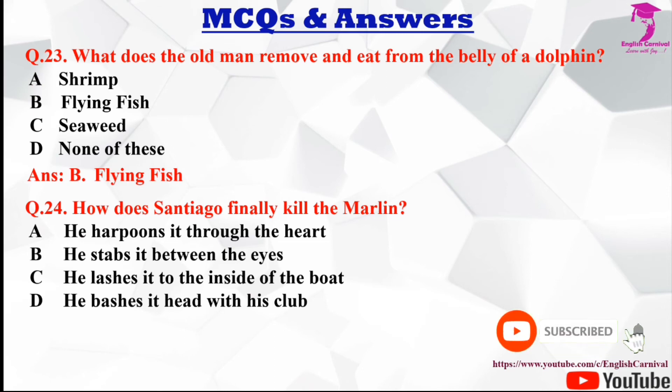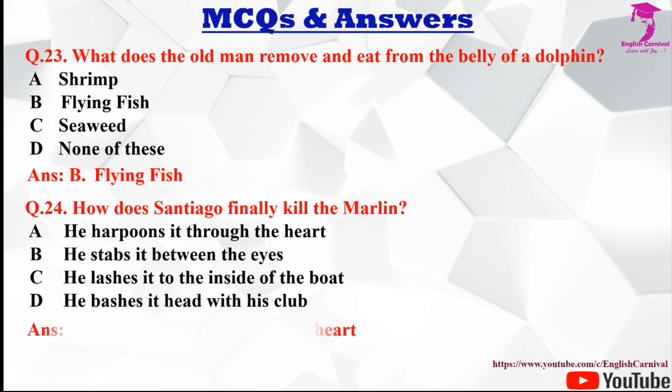Question number twenty-four: How does Santiago finally kill the marlin? Options are A he harpoons it through the heart, B he stabs it between the eyes, C lashes it to the inside of the boat, and D he bashes its head with his club. The correct answer is A, he harpoons it through the heart.